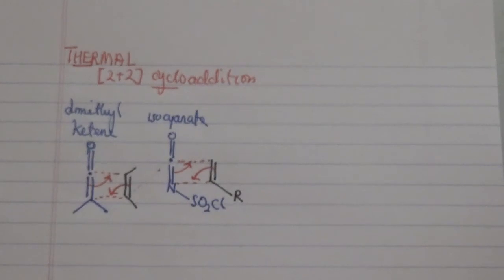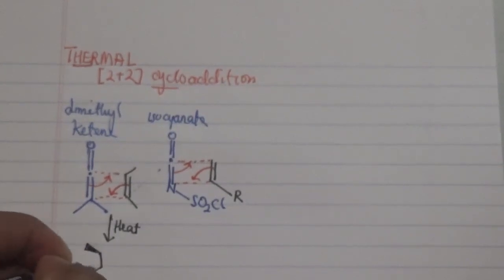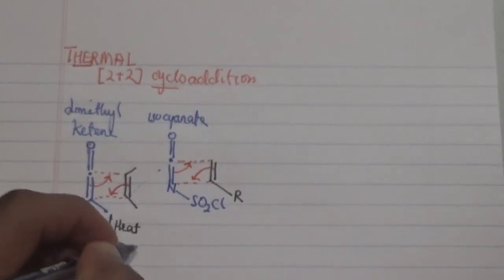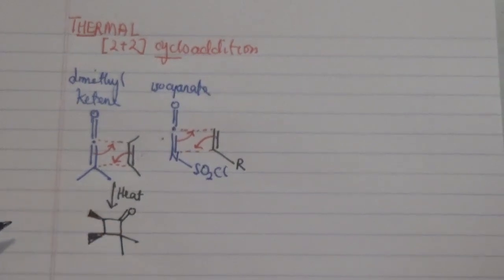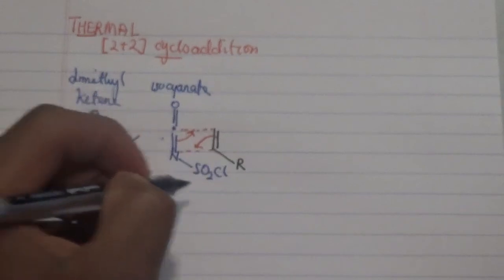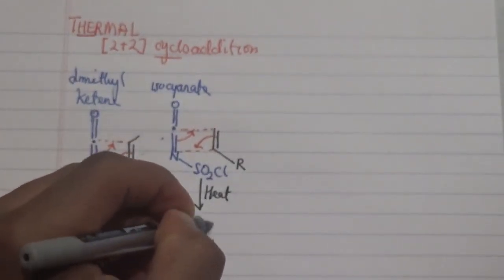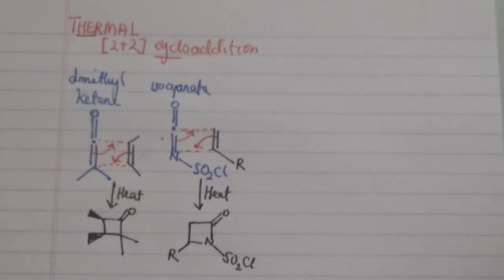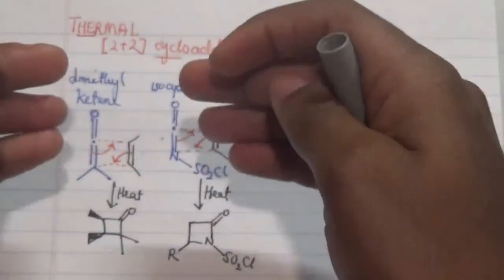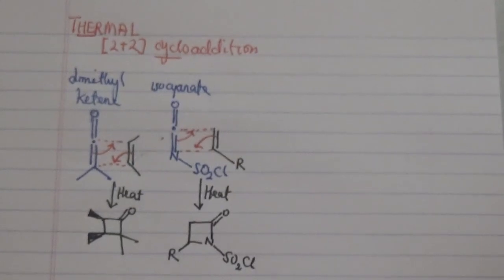The product from the first reaction — dimethyl ketene with an alkene — gives a cyclobutanone-type compound with the oxygen present. On the other side, the isocyanate subjected to heat forms its corresponding cyclic product — a beta-lactam-type compound.